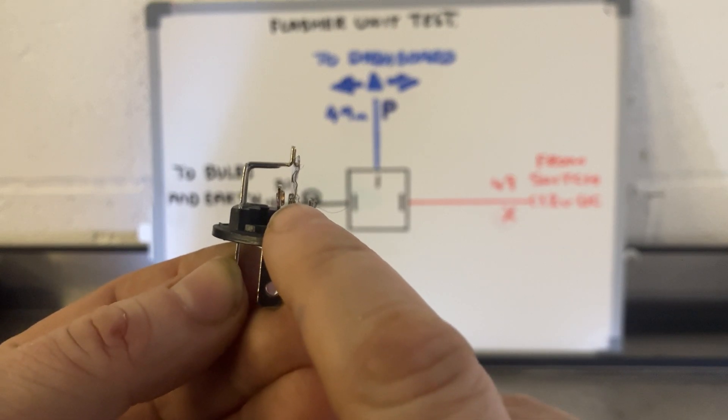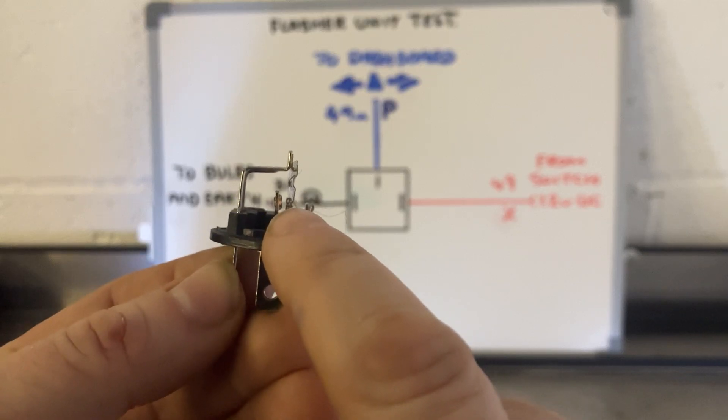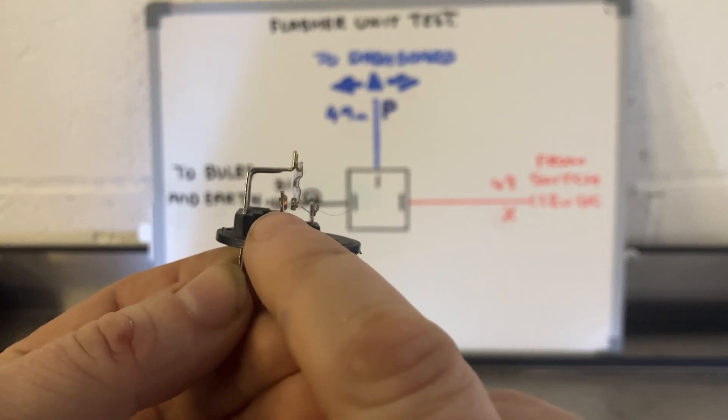When those two contact, that's an easier path for the electricity or current to take. So it will take that path. When that connects, that completes the circuit and allows current to flow to your bulbs.